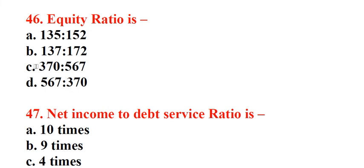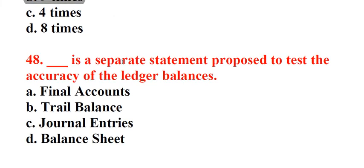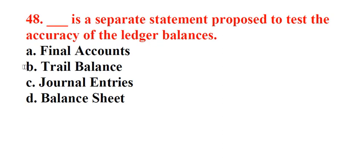Question 47: Net income to debt service ratio is. A. 10 times, B. 9 times, C. 4 times, D. 8 times. Answer: B. 9 times. Question 48: Underscore is a separate statement proposed to test the accuracy of the ledger balances. A. Final accounts, B. Trial balance, C. Journal entries, D. Balance sheet. Answer: A. Final accounts.